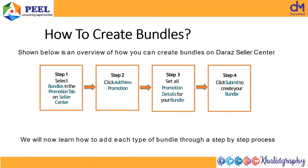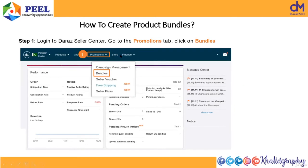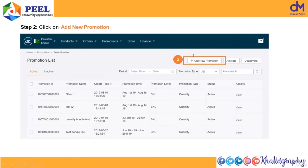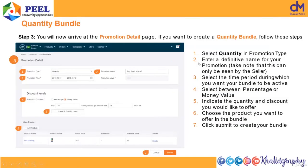Bundle create करने के steps: Step 1 — Seller Center में login होकर Promotions tab के अंदर Bundles में जाएं। Add new promotion करें, फिर bundle type select करें। आपके सामने options आते हैं: quantity bundle, buy one get one free bundle, या combo bundle जैसे buy two get 10% off। यह promotions tab आपके left menu bar और top menu bar दोनों में होता है।